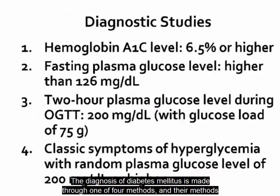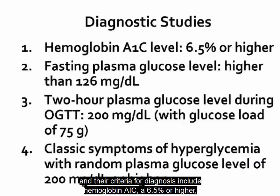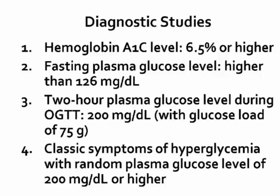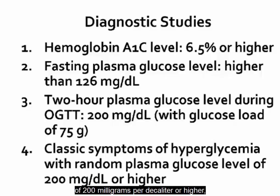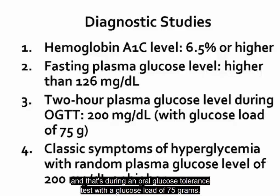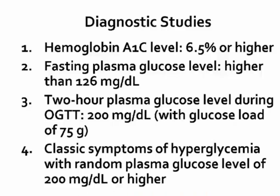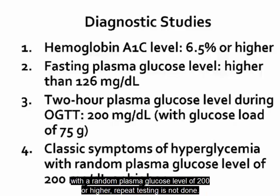The diagnosis of diabetes is made through one of four methods. The criteria include: hemoglobin A1C of 6.5% or higher; fasting plasma glucose level of 126 mg/dL or higher; a 2-hour glucose level of 200 mg/dL or higher during an oral glucose tolerance test with a 75-gram glucose load. If a patient presents with a hyperglycemic crisis or clear symptoms of hyperglycemia with a random plasma glucose level of 200 or higher, repeat testing is not required.